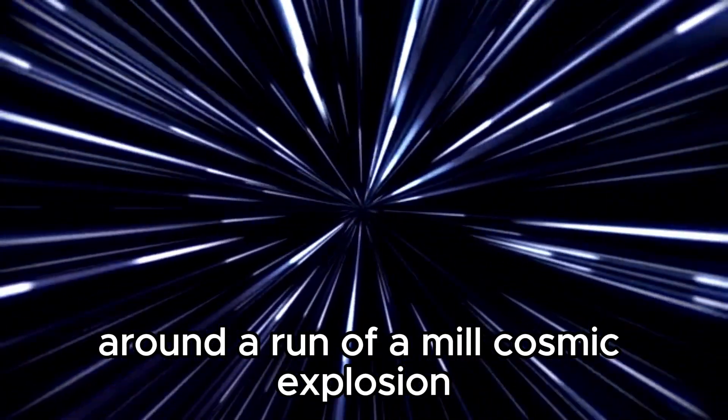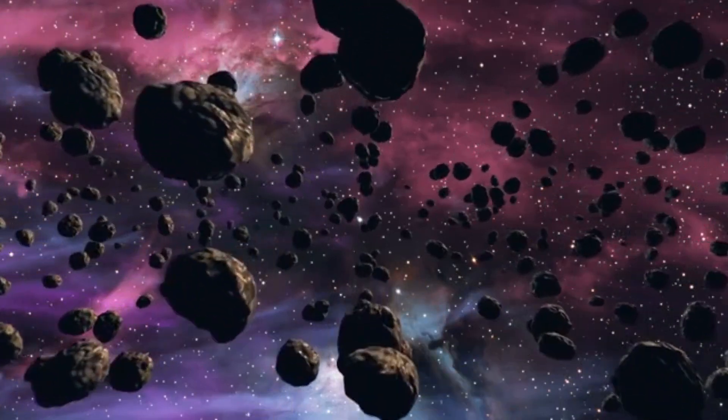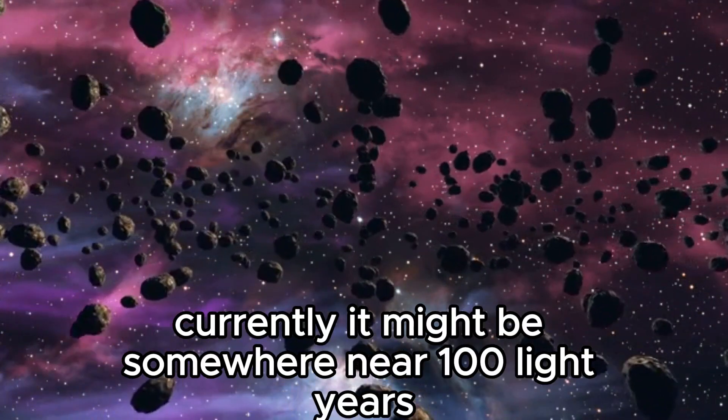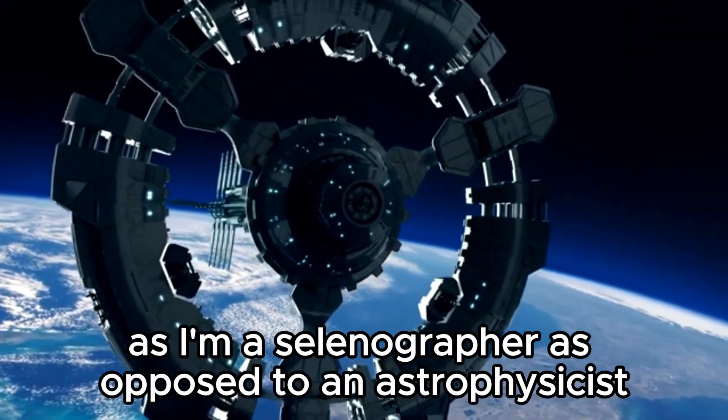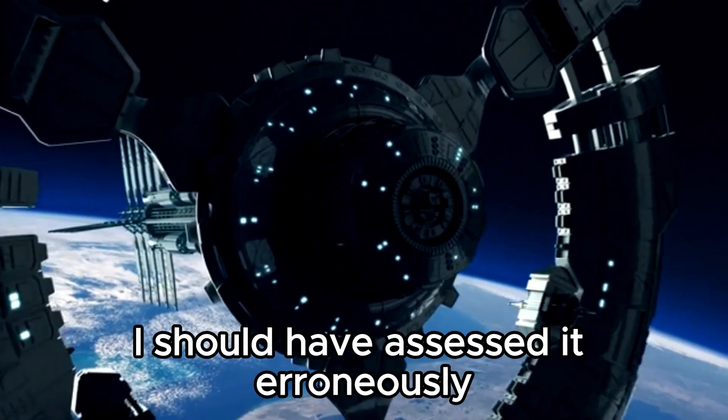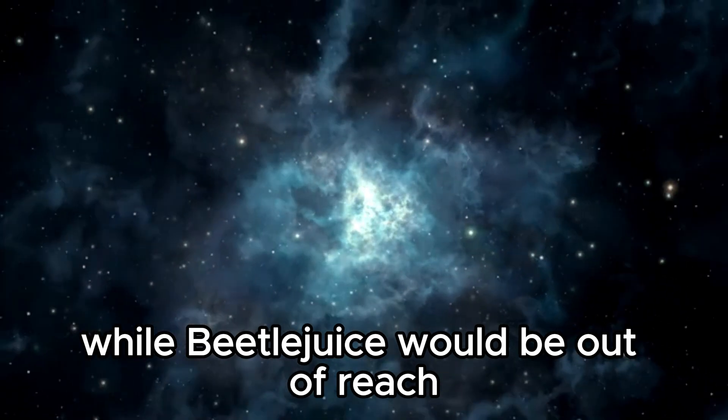The danger zone around a run-of-the-mill supernova is a fascinating concept. Currently, it might be somewhere around 100 light-years. Alpha Centauri is still close enough, while Betelgeuse would be out of reach.